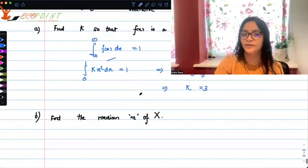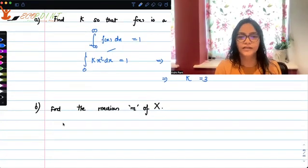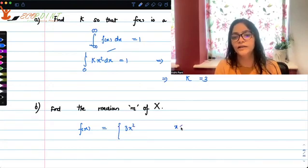Now the second question, find the median of this x. So x is following this pdf. We now know that fx, actually kx square, is 3x square where x lies between 0 to 1 and 0 otherwise.